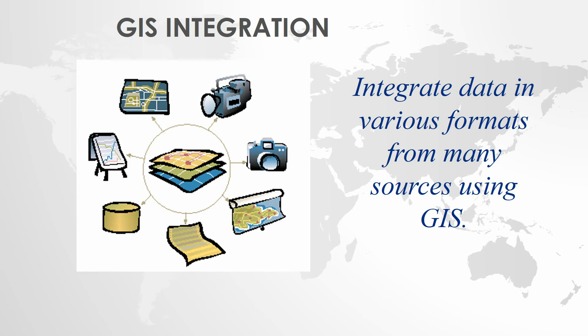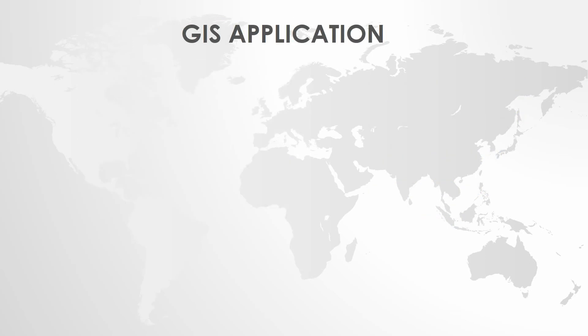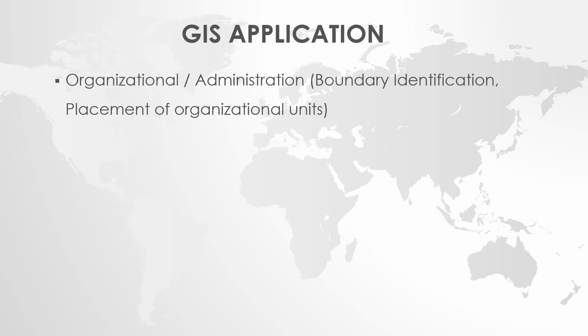This is the integration of GIS applications. The first application is the administrative application, which involves boundary identification and placement of organizational units — such as union policy locations, district and DC offices, and divisional headquarters. These administrative units can be easily identified using GIS.